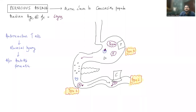Hello everyone. In this lecture, I am going to discuss about Pernicious Anemia. Some authors say that Pernicious Anemia is the most common cause of vitamin B12 deficiency in the world. It is supposed to be the most common cause. However, it is not very common in our part, like in India.